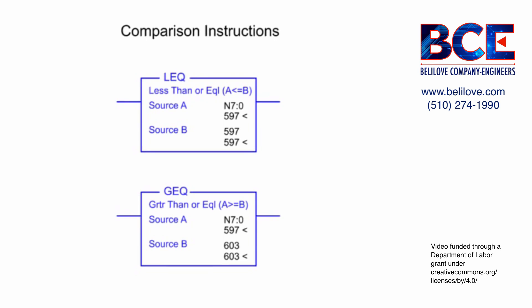A common method of temperature control is an on-off control system. Using comparison instructions in a PLC program, outputs are energized when the setpoint is reached.